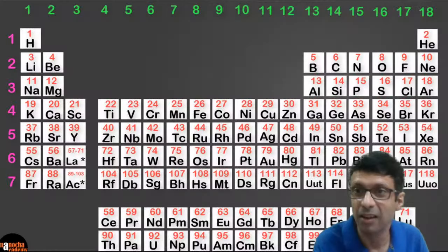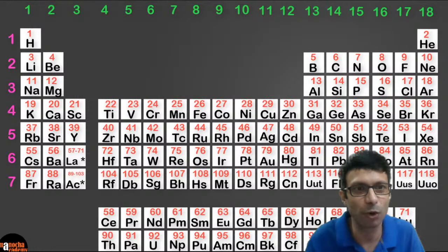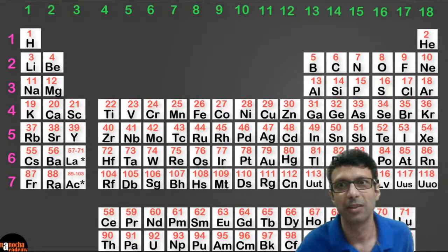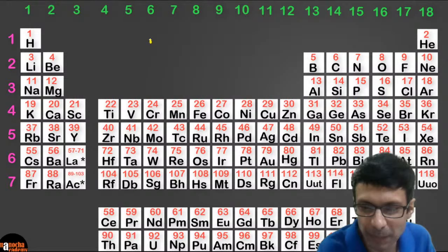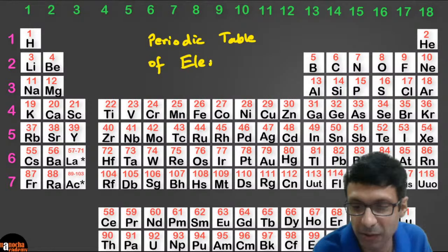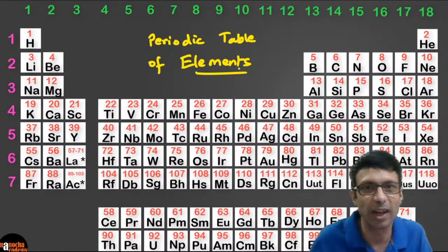Speaking of elements — you must have seen this huge chart. What is this called? It's the periodic table — the periodic table of elements. How many elements are there? There are 118 elements, all arranged in this periodic table.